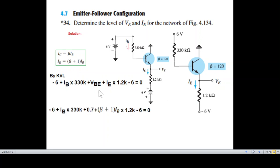Now putting in the value of VBE to be 0.7 and replacing IE by this formula, so beta plus 1 IB, and putting the value of beta which is in given circuit 120, simplifying.